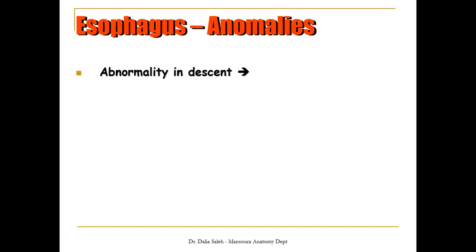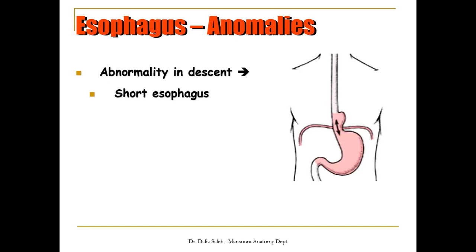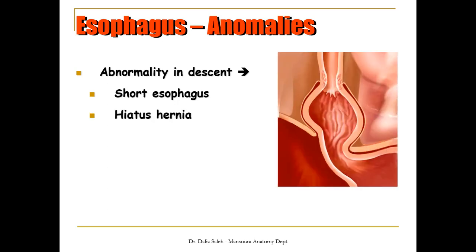An abnormality in the descent or elongation of the esophagus gives us what is called short esophagus. Because the esophagus is short, it pulls the cardiac end of the stomach through the esophageal hiatus of the diaphragm into the thorax — in this case, we call this anomaly hiatus hernia.